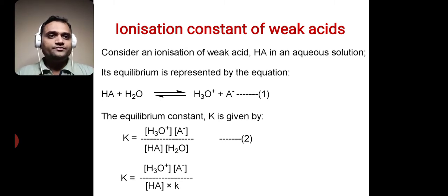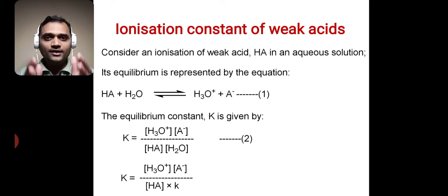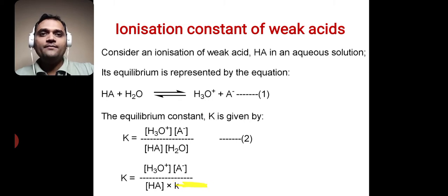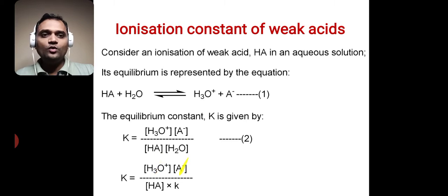Now, water is our solvent, so we have an aqueous solution. In solution, water is present in a large excess amount. Therefore, the concentration of water is taken as constant. In this equation we have replaced the molar concentration of H₂O with the constant K, because water is present in a large amount. So our equation becomes K equal to molar concentration of H₃O⁺ times molar concentration of A⁻, divided by molar concentration of HA, times K.